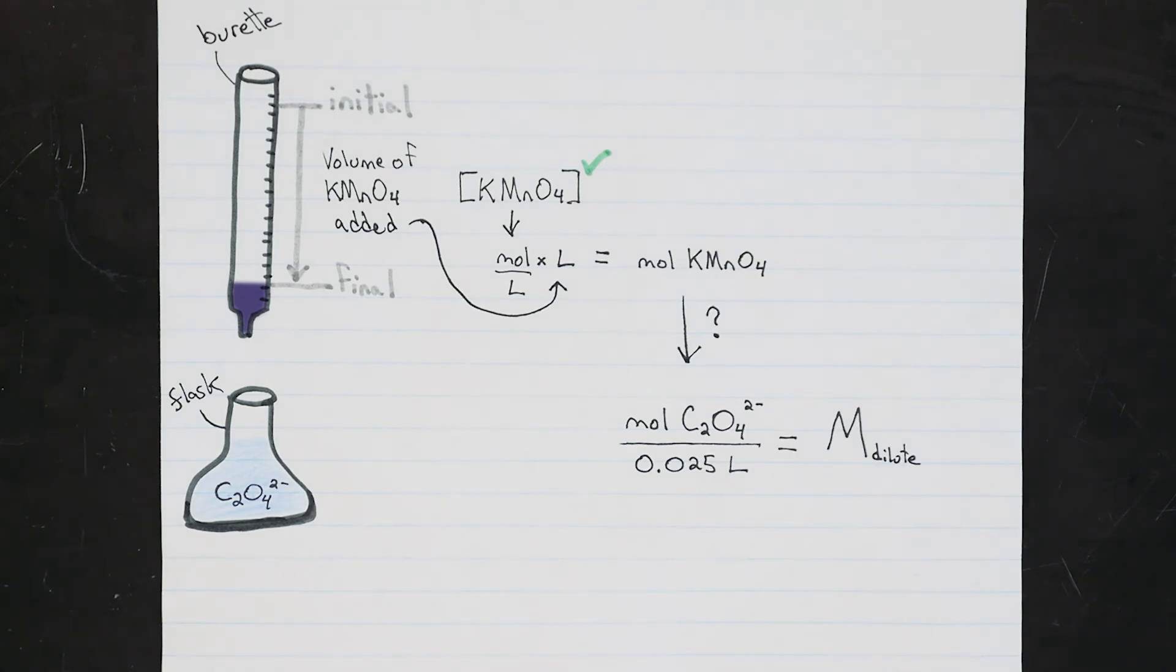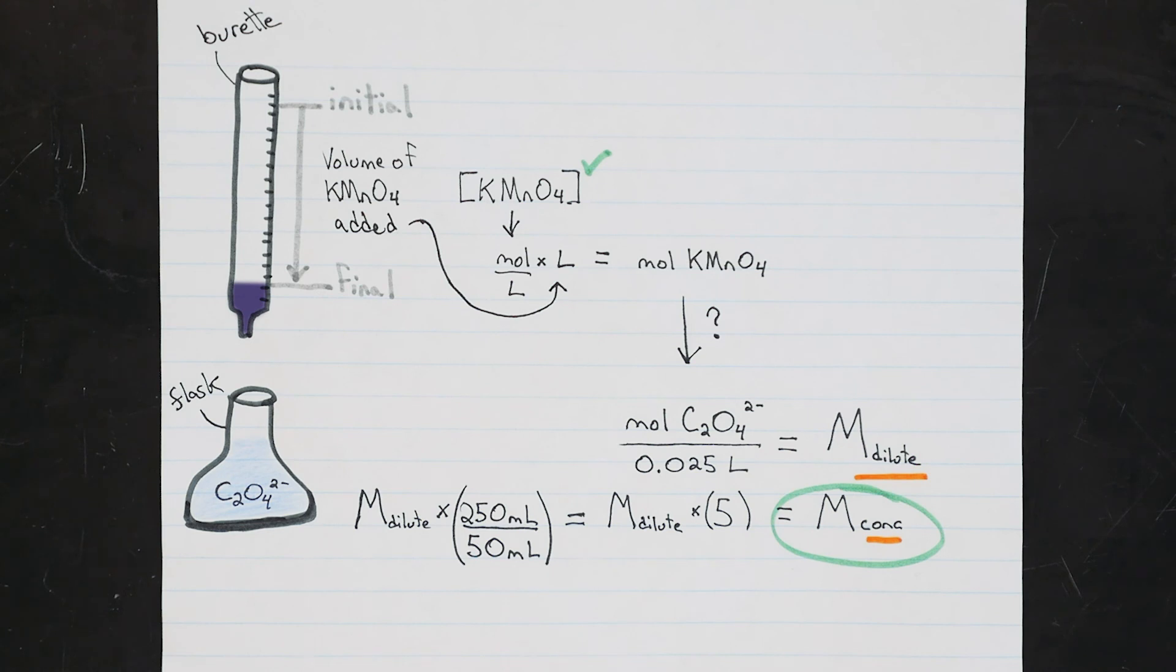Remember though, that's the dilute sample. This dilute sample was actually made from diluting 50 mils of the original oxalate solution of unknown concentration in a 250 mil flask. So, if you've solved through the concentration of the dilute oxalate solution, the concentration of the original concentrated oxalate solution must be five times more concentrated. And with that, you're done.